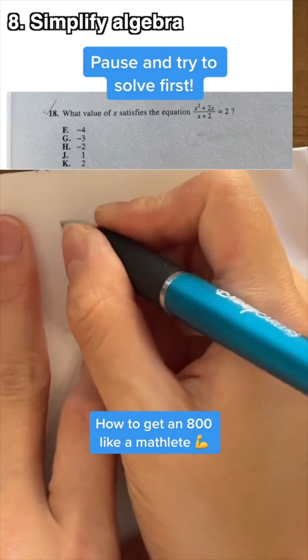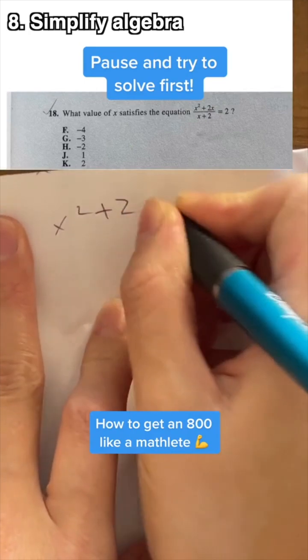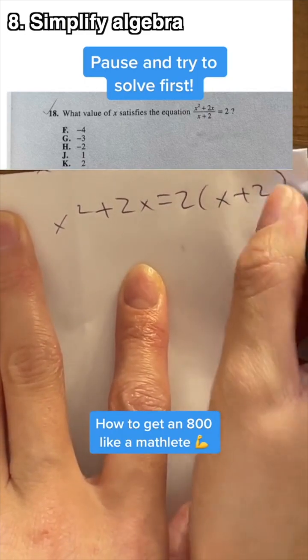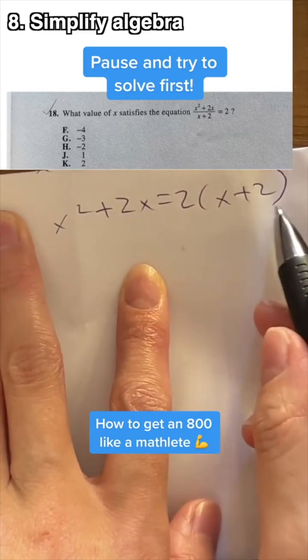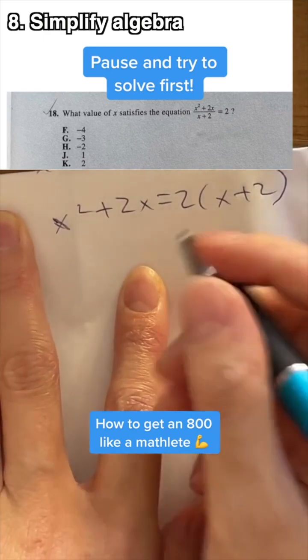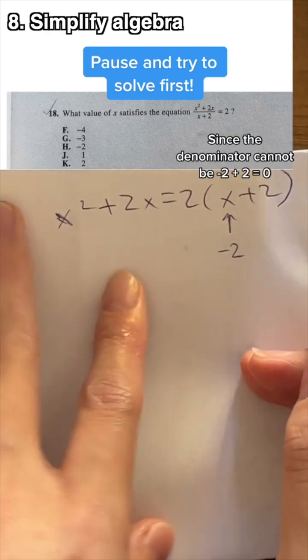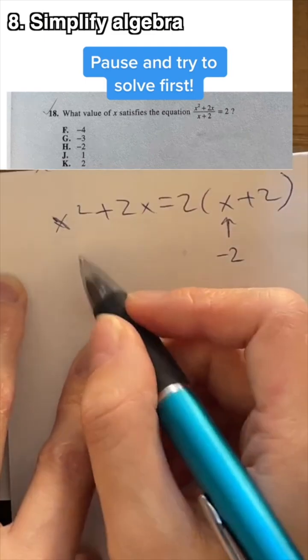I've showed this problem before. And the first time, I showed the direct way that many students would use, which is to multiply both sides by this x plus 2. And what to not do because this cannot be negative 2. But there is a way where you can be smarter about it and simplify early on.